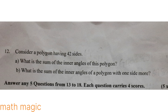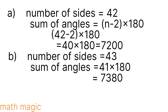Now consider a polygon having 42 sides. What is the sum of the inner angles of this polygon? The formula for the sum of inner angles is (n minus 2) into 180, where n is the number of sides. Here n equals 42, so sum equals (42 minus 2) into 180 equals 40 into 180 equals 7200 degrees.